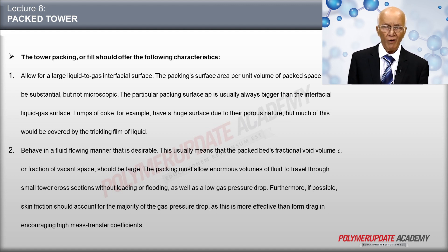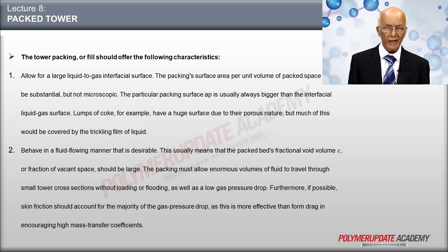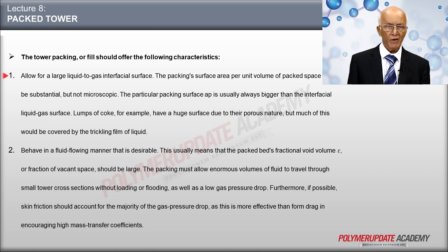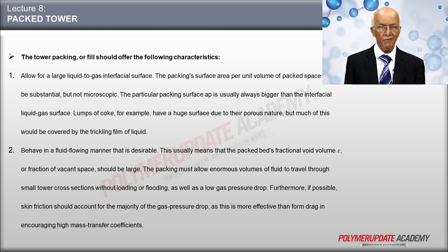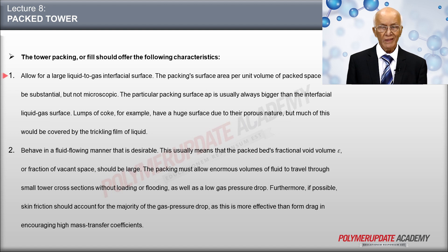The tower packing or fill should offer the following characteristics. First, it should provide a large interfacial surface between the liquid and gas. The surface of the packing per unit volume of packing space should be large, but not in a microscopic sense. Lumps of coke, for example, have a large surface due to their porous structure, but most of this would be covered by the trickling liquid film. The specific packing surface Ap is almost always greater than the interfacial liquid-gas surface.